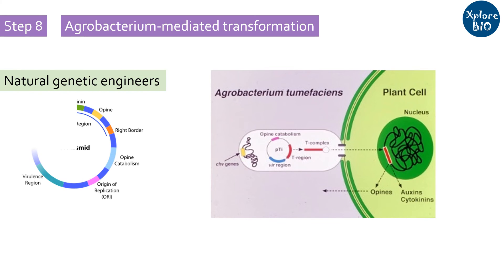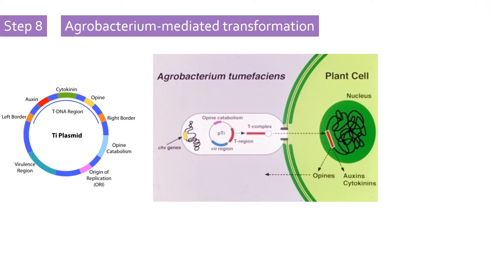Agrobacterium has a unique ability to naturally transfer DNA fragments — the tumor-inducing DNA fragments — which lie within the T-DNA, to plant cells. Once the DNA gets incorporated in the plant genome, it starts producing food for bacterial growth. Importantly, any DNA sequence within the T-DNA can be transferred to the plant. Researchers replaced these tumor-inducing DNA fragments within the T-DNA region with the DNA of their interest so that it gets incorporated into the plant genome. Once incorporated, the plant has to be screened and selected for further multiplication.